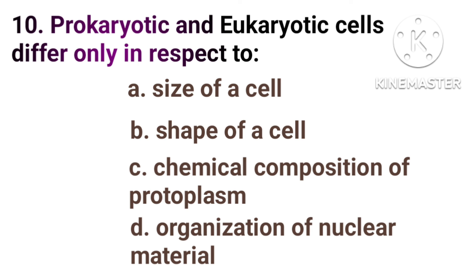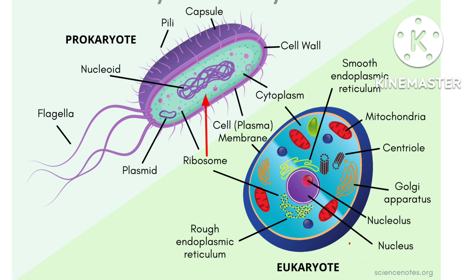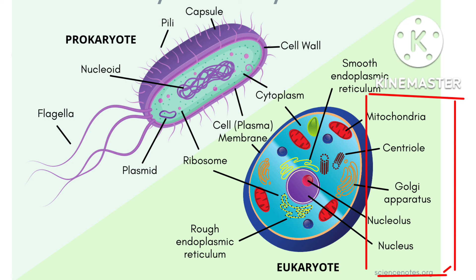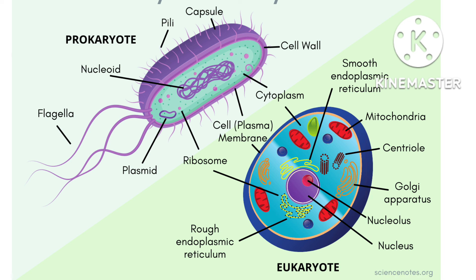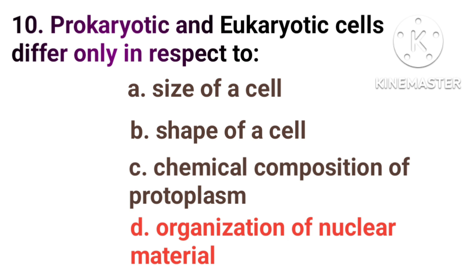Prokaryotic and eukaryotic cells differ only in respect to: Option A, size of a cell. Option B, shape of a cell. Option C, chemical composition of a protoplasm. Option D, organization of nuclear material. In prokaryotes, the nuclear membrane is absent and the nucleus is loosely defined. In eukaryotes, the nuclear membrane surrounds the nucleus, which is well defined. In prokaryotes, the cell organelles are missing, while in eukaryotes, the cell organelles are present. The correct answer is Option D, organization of nuclear material.